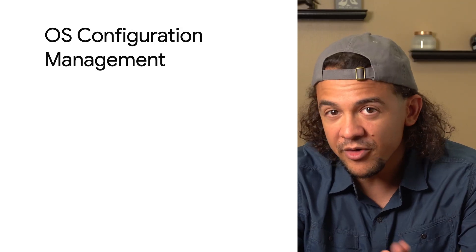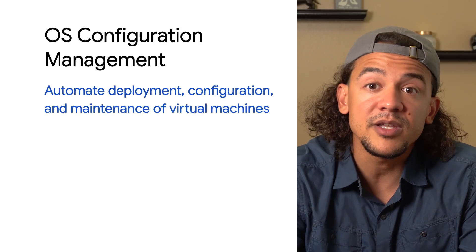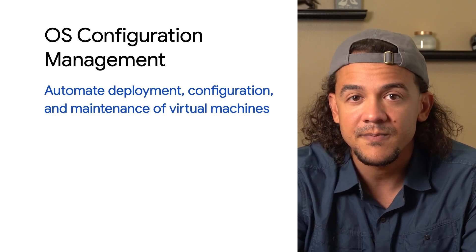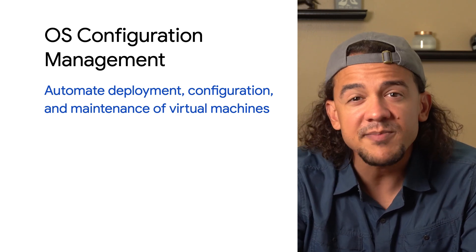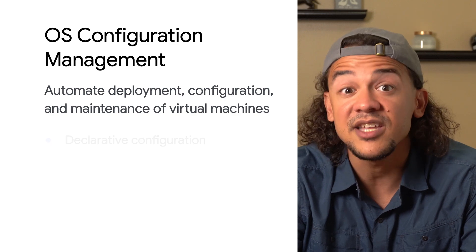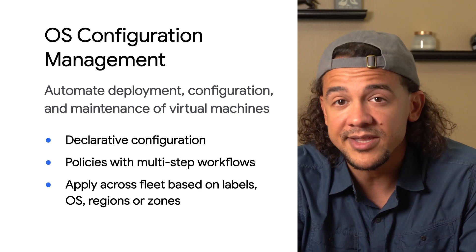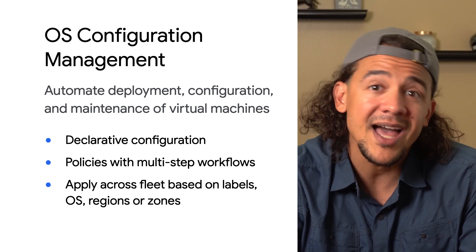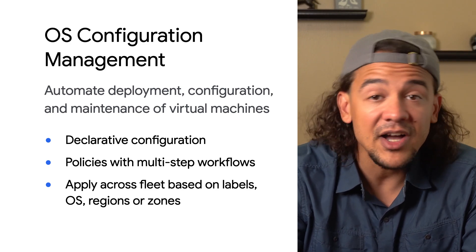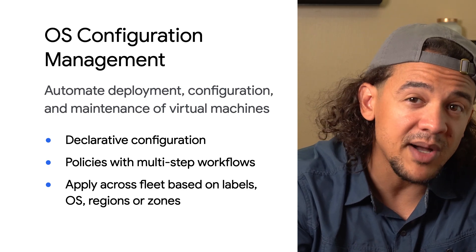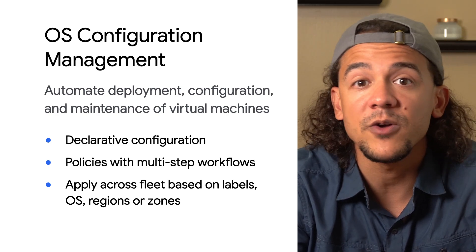The third big piece of VM Manager is OS configuration management. With OS configuration management, you can automate the deployment, configuration, and maintenance of your virtual machines from a centralized place. You do this by creating OS policies that contain declarative configuration for each VM, like packages that should be present, package repositories that should be added, files that should exist, and scripts that you'd like to run. A single OS policy can be written to define a multi-step workflow.